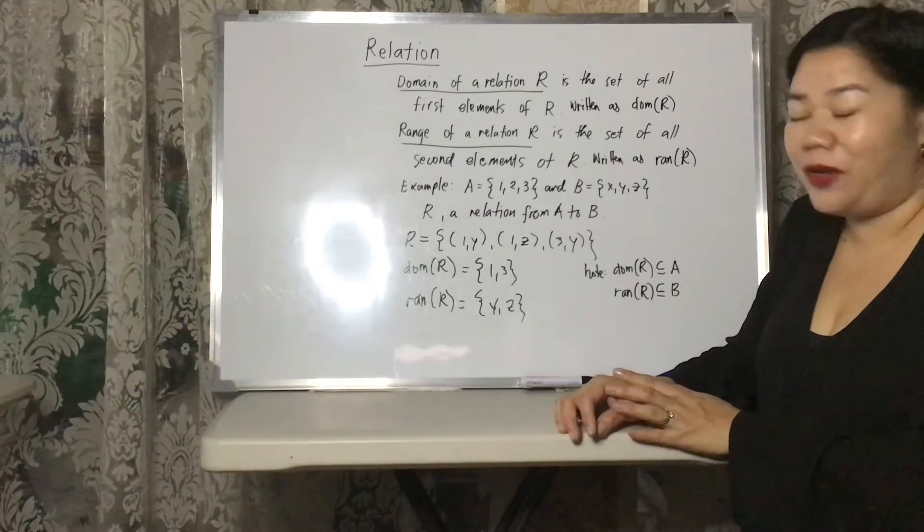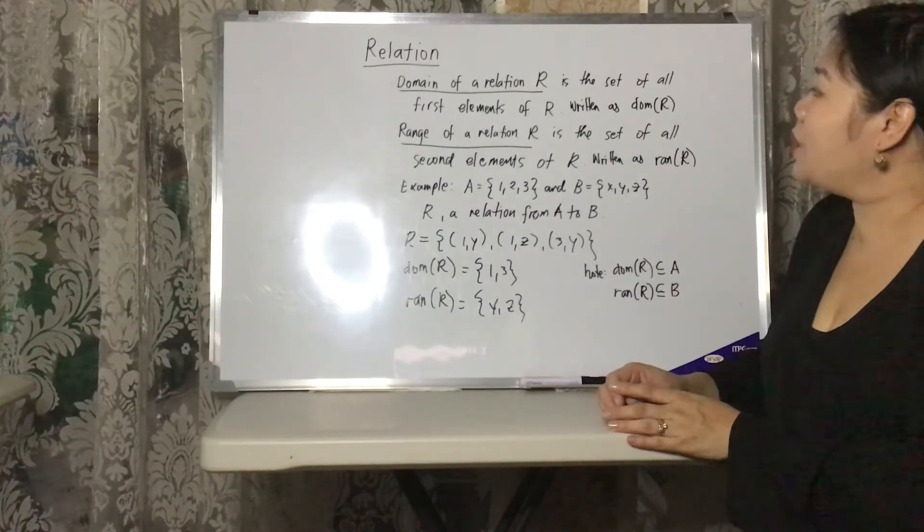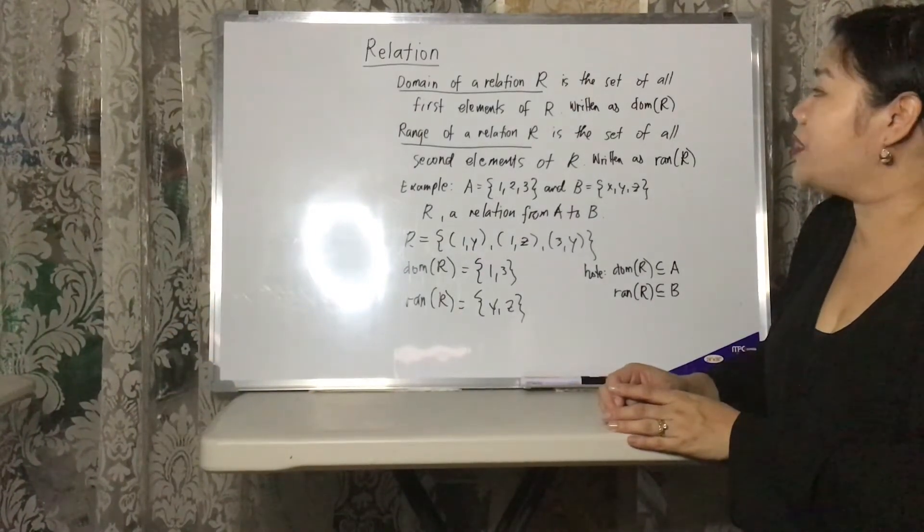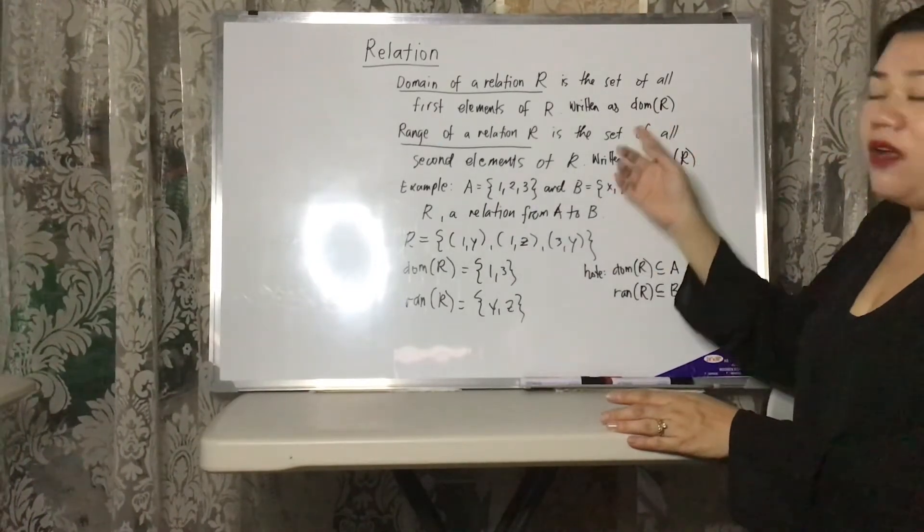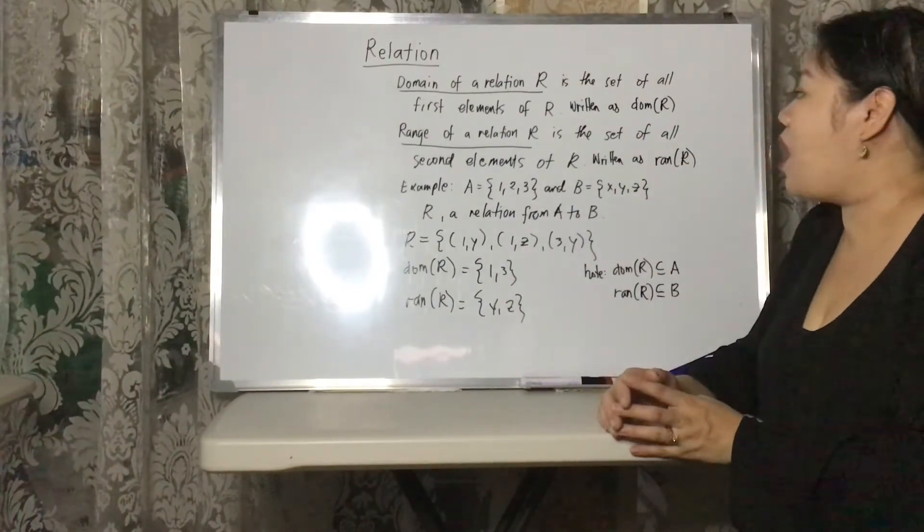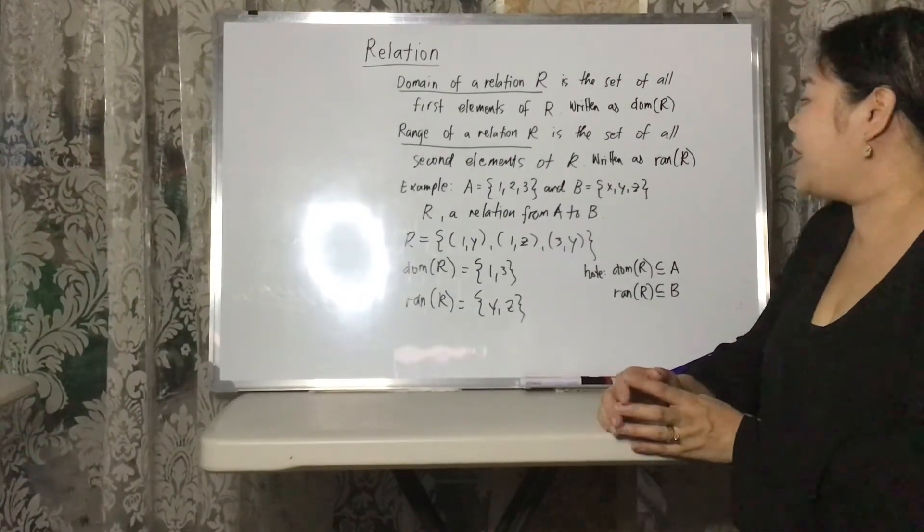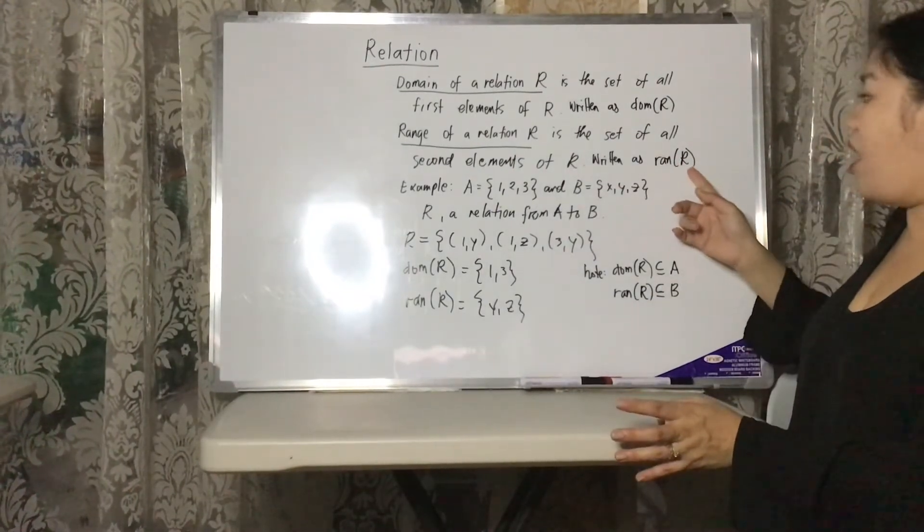Let's define first. Domain of a relation R is the set of all first elements of R written as DOM R. And the range of a relation R is the set of all second elements of R written as RAN R.